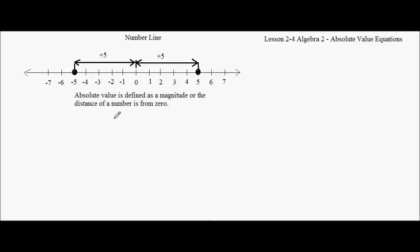Another formal definition is that absolute value is a distance — specifically, a distance from zero. So negative 5 is 5 units away from zero. Distances can't be negative, unless you're thinking of something like latitude or longitude. It's the magnitude of a distance from a certain point.